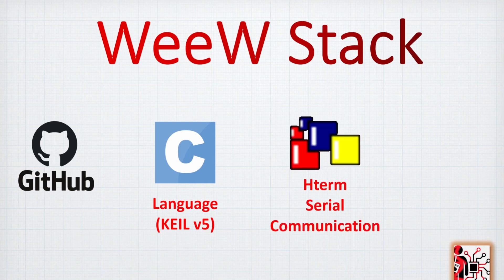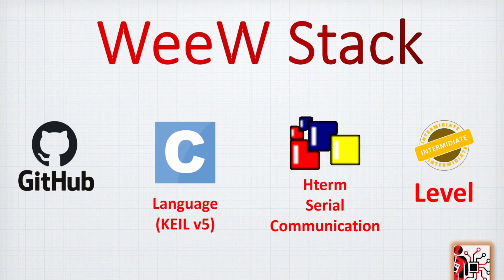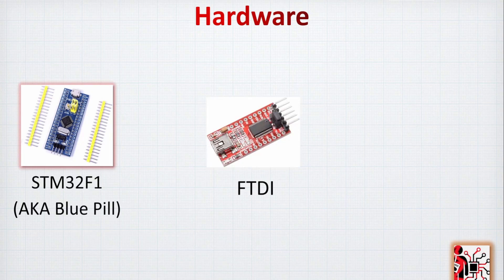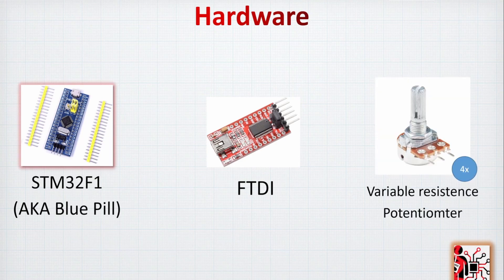I will also be using H-term for serial communication. We will have a manual example to see how to run the interfacing manually. This is for intermediate level, but if you are new to serial communication I will go into a little bit of detail and explain how the communication works between a microcontroller and a computer, especially for Python. For hardware, I'll be using the STM32F1. We need an FTDI to interface with the computer, and we'll add four potentiometers to see how we can work with four signals at the same time.